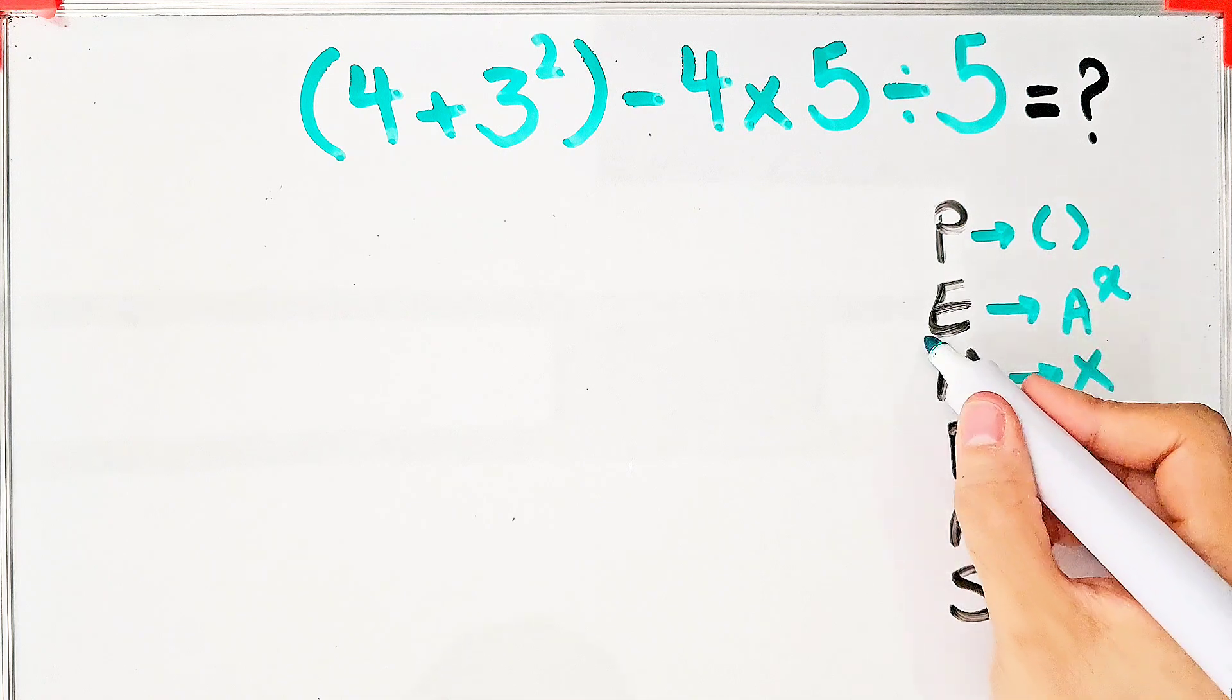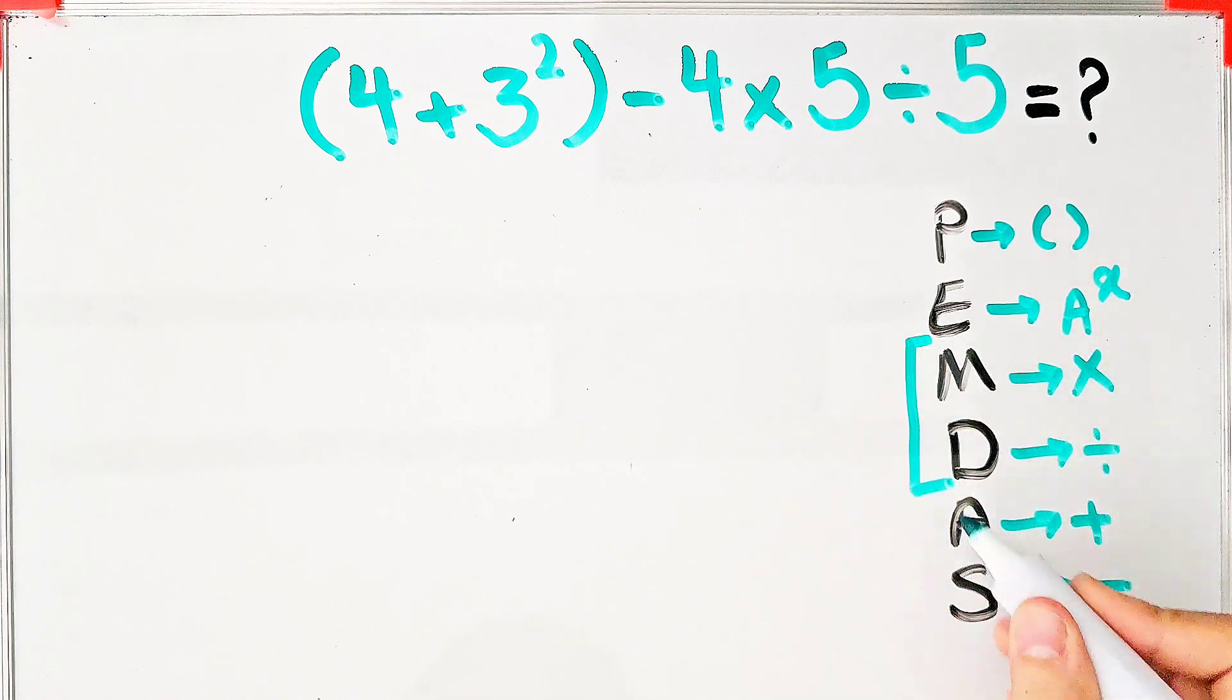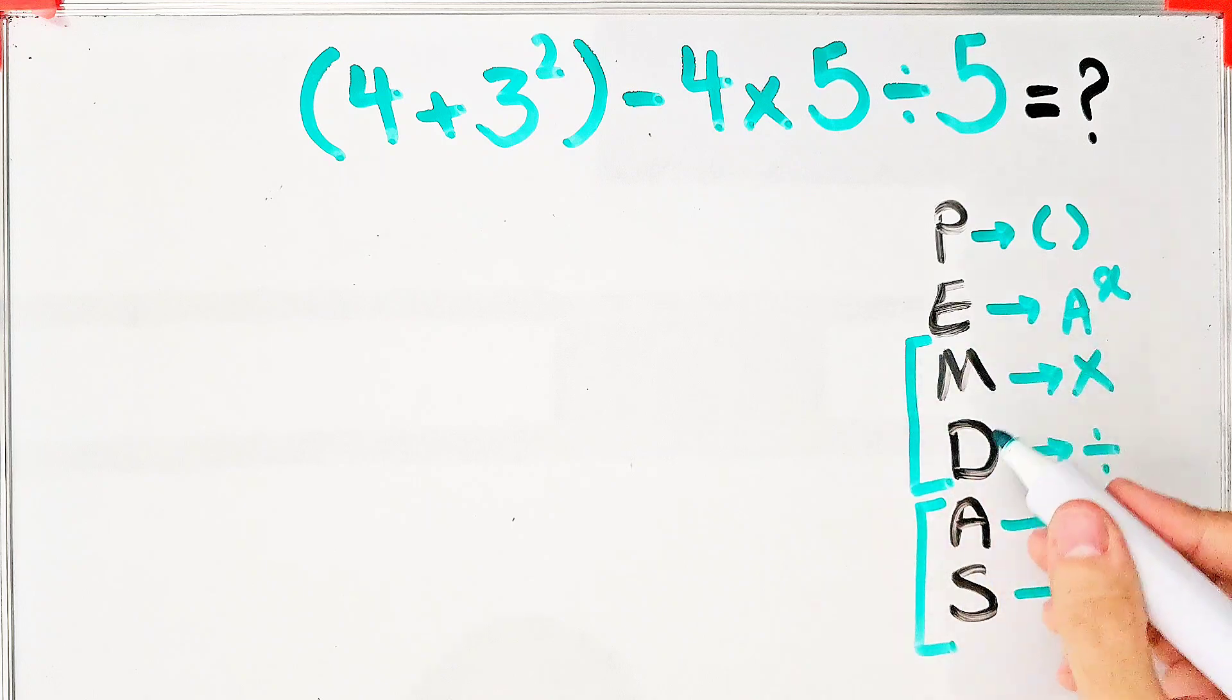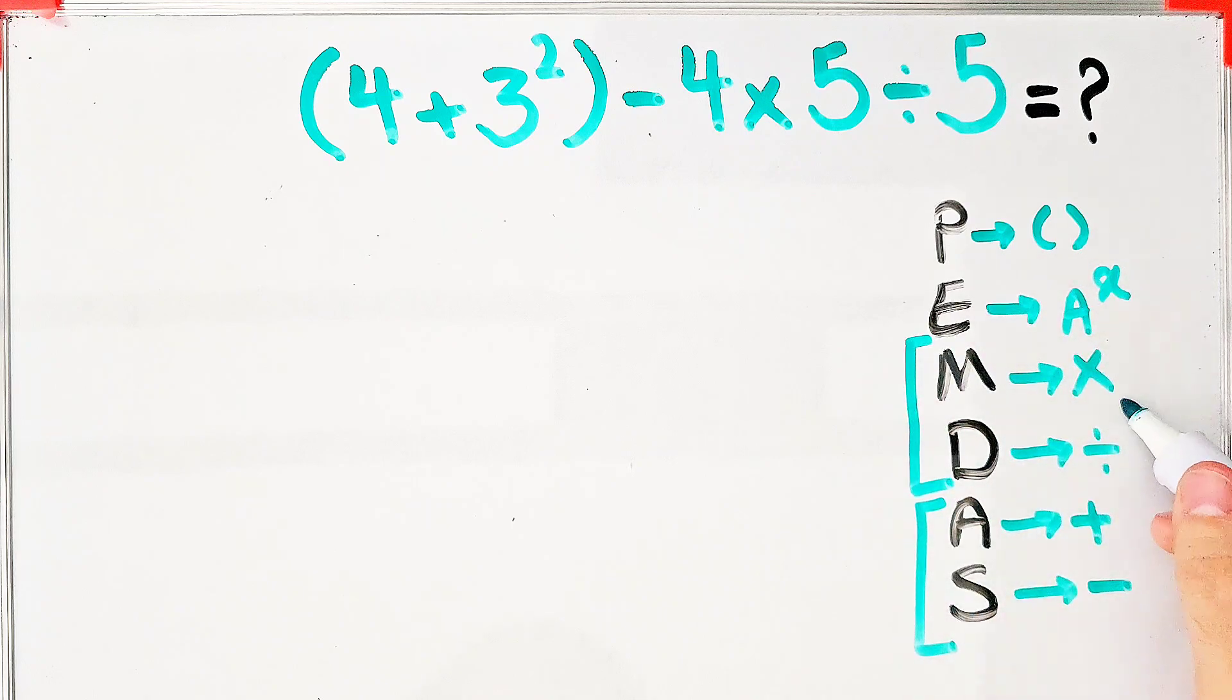Multiplication and division have the same level of priority, also addition and subtraction have the same priority. When we have both in an expression, we start from the left and simplify the question.